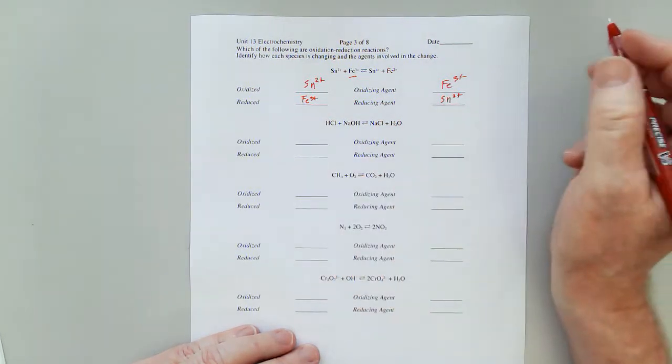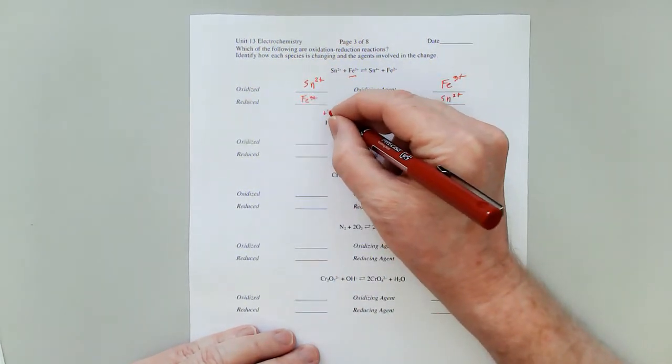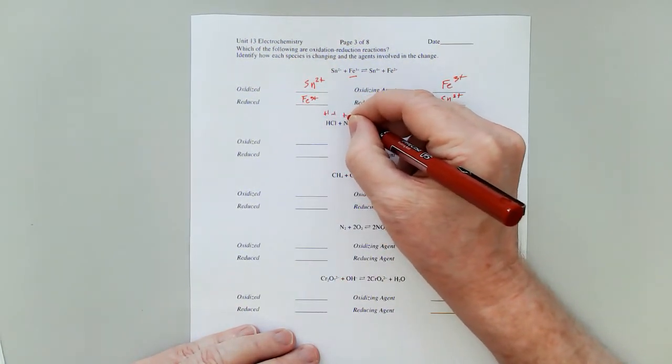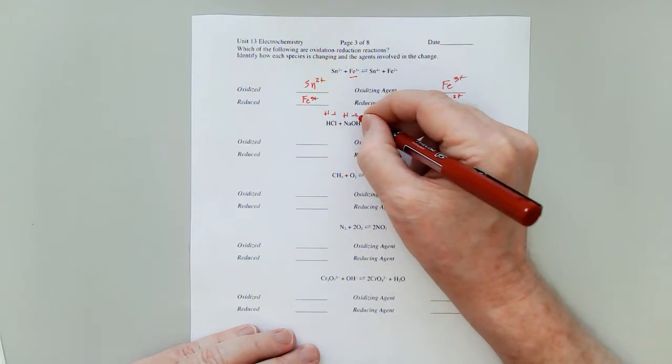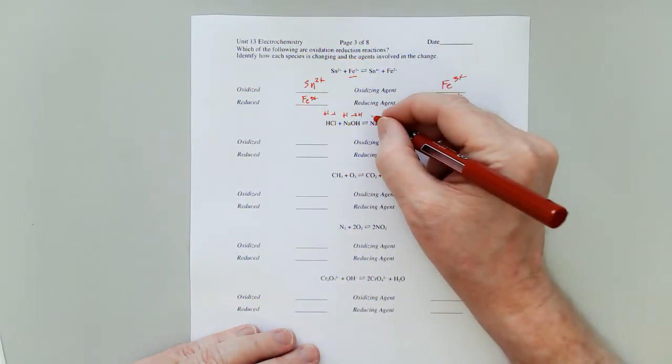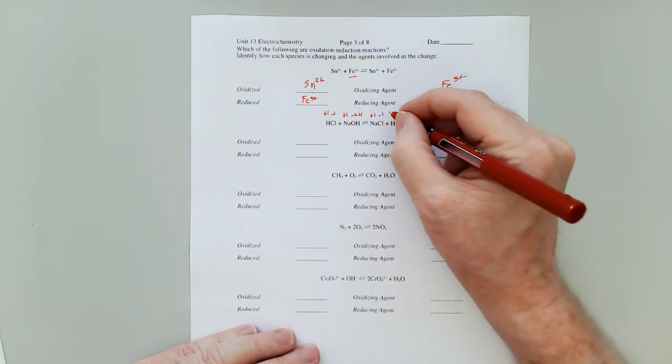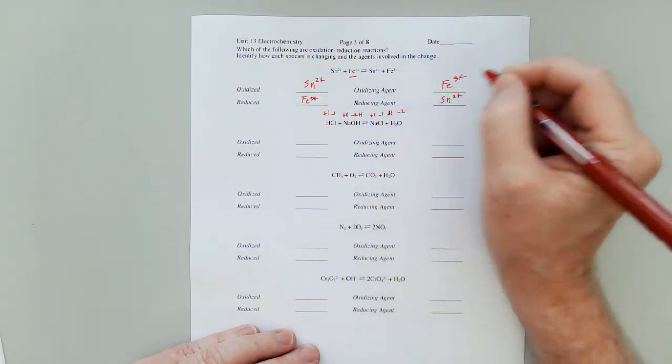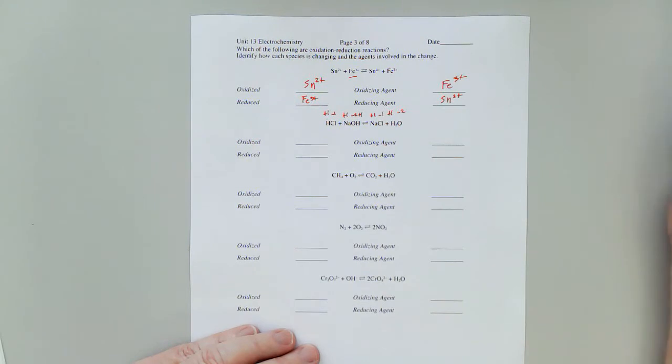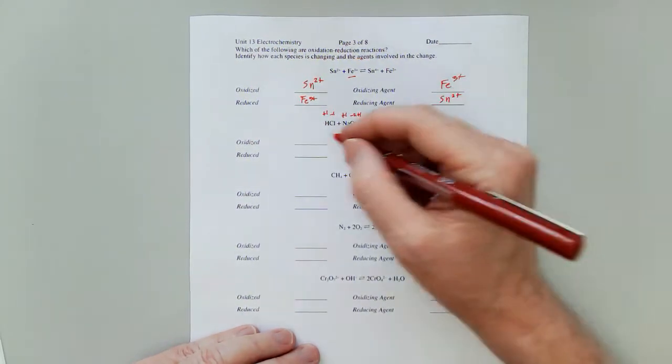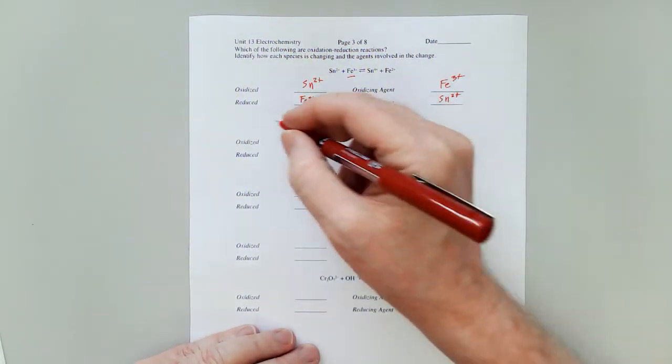Now, here, hydrogen plus one, chlorine minus one, sodium plus one, oxygen negative two, hydrogen plus one. Here, plus one on a sodium, negative one on a chlorine, plus one on that negative two on the oxygen. You know what? This is an acid-base reaction. This is not redox. No redox.